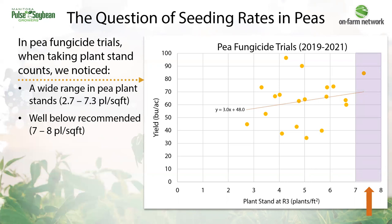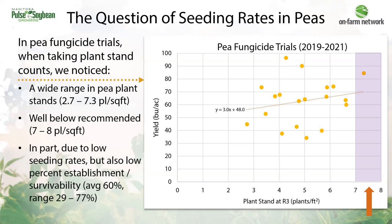However, we were seeing some really good yields at what would be considered pretty low stands. This raised some questions: are we leaving behind any yield, and why are these plant stands so low in peas? In some cases, seeding rates were generally just lower, but across the board we were on average only seeing 60% of the seed put in the ground become a reproductive plant at R3.